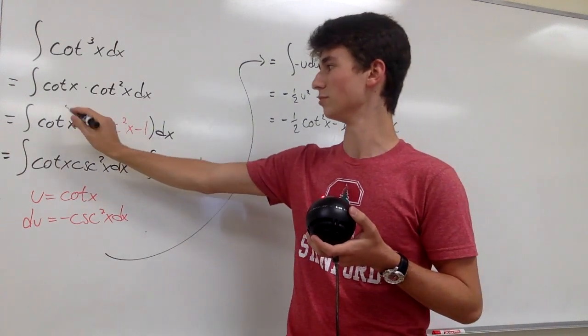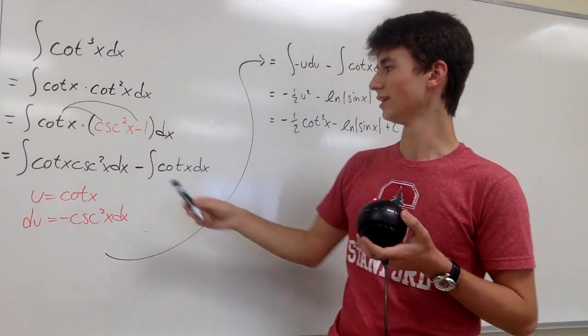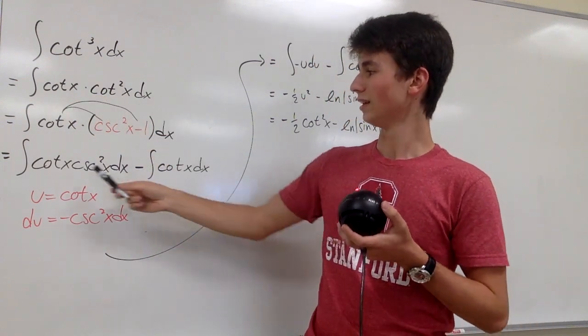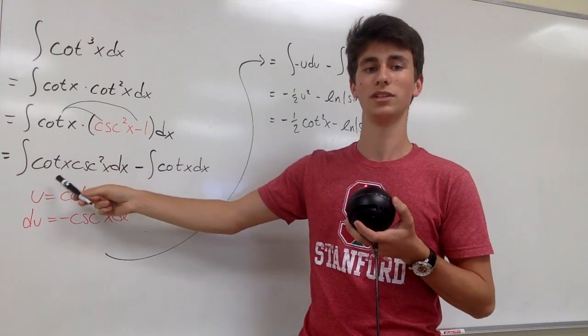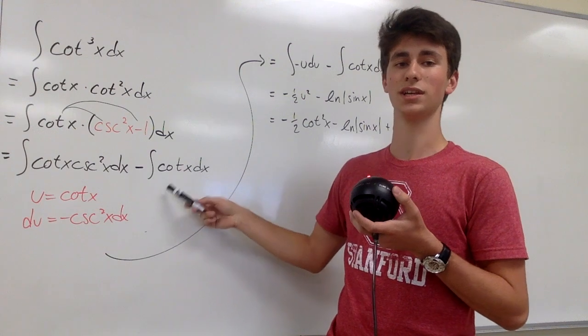And then we can distribute the cotangent and split the integrals. And so we end up with cotangent x times cosecant squared of x dx minus cotangent of x dx.